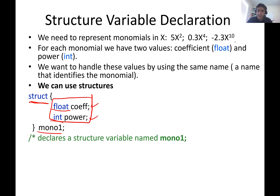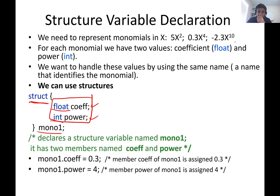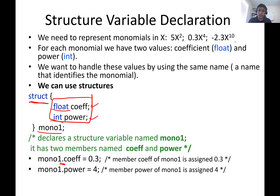This is declaring a structure. One way of initializing the values is using the dot operator, which we see for the first time in C — it can be read as 'the member of.' So mono_one.coefficient refers to the coefficient member of mono_one, and we assign it the value 0.3, and mono_one.power the value 4.